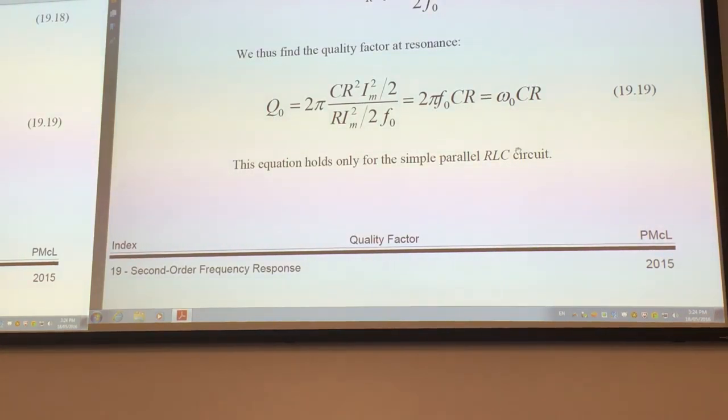Normally, quality factor is calculated at or around the resonant frequency. Otherwise, it depends on frequency, so it's very difficult to calculate. Normally, when we have resonance circuits, we are interested in their behavior near the frequency of resonance. That's how we calculate it for RLC circuit.